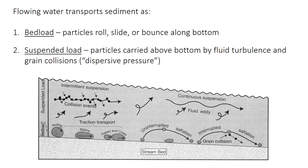Moving fluid — we're considering water here, but this could equally apply to air — transports sediments with two main types of motion. The sediment can move along the riverbed by sliding, rolling, or bouncing in a process called bed load transport. The rolling and sliding motions are called traction, and the bouncing is called saltation.